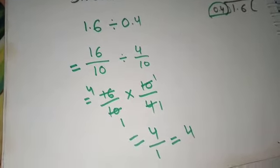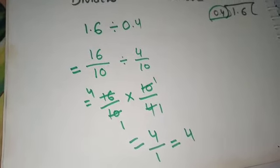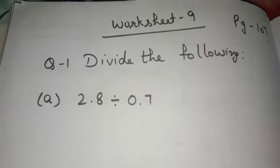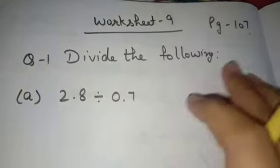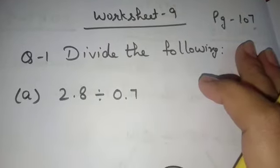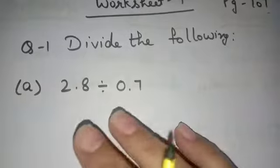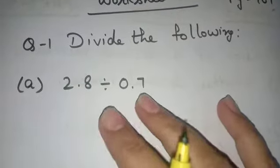Now the same method we will use in our next worksheet, worksheet 9. Let's start worksheet 9 which is at page number 107 of our book. Question number 1 is divide the following. Part A is 2.8 divides 0.7.